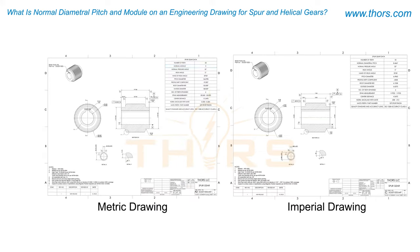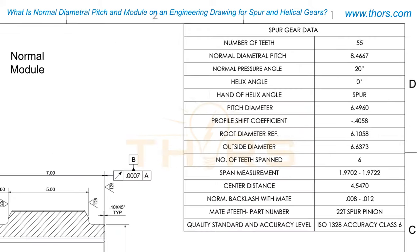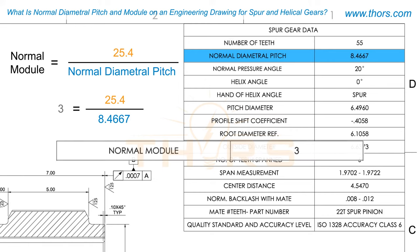On metric gear drawings, the normal module is used instead of normal diametral pitch. Normal module can be calculated by dividing 25.4 by the normal diametral pitch. For example, the normal module for this gear would be 25.4 divided by 8.4667, which equals 3.